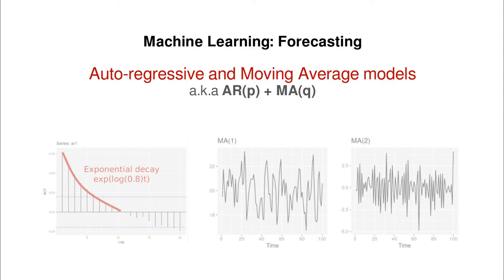Hi everyone, so let's start our journey into the ARIMA models and we're going to start with the very simple ones which are called autoregressive and moving average models or simply AR(p) and MA(q).